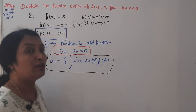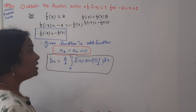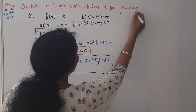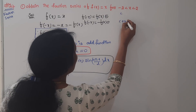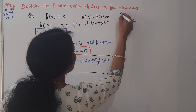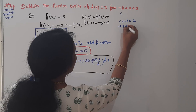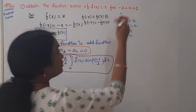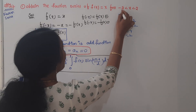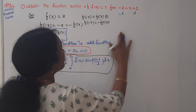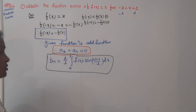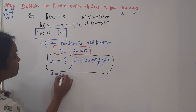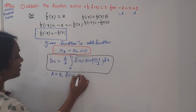We are using the c to c plus 2L concept, which I already covered in the previous video. The interval is minus 2 to 2, so L is equal to 2. From the c to c+2L framework: 2L equals 4, therefore L equals 2. Our L value is 2 and the function value is x.